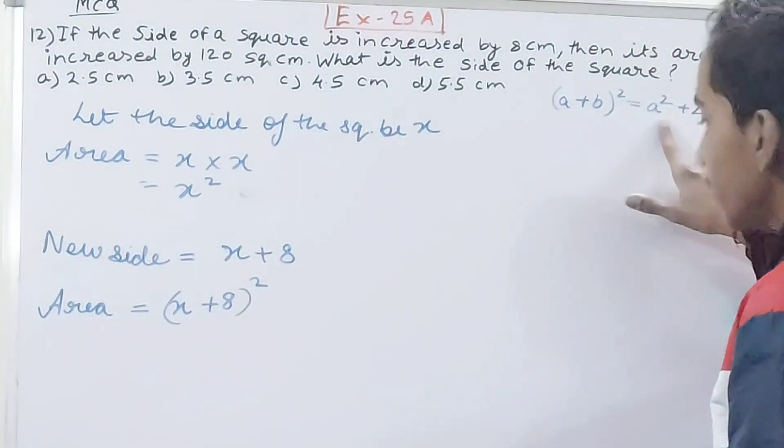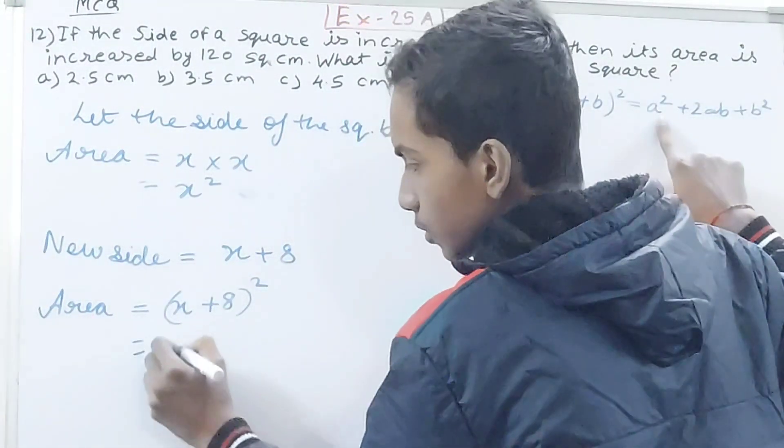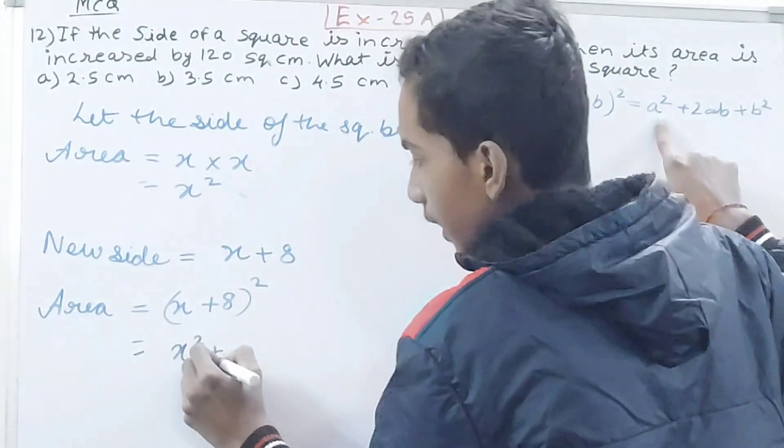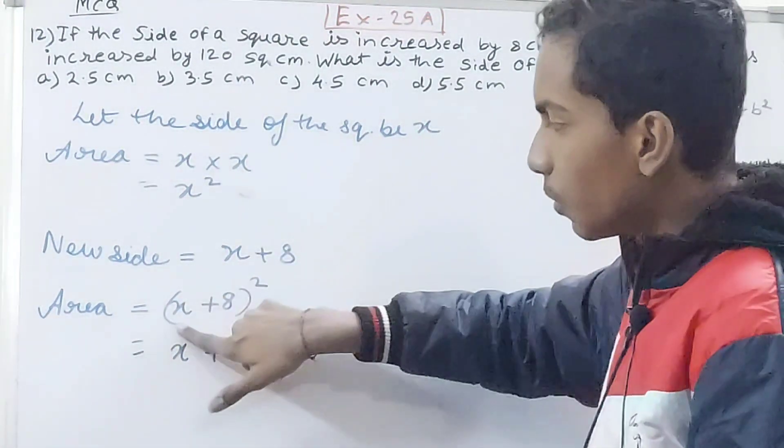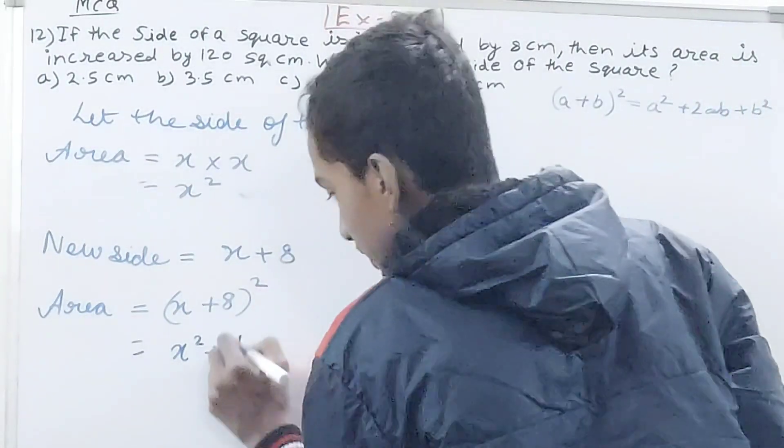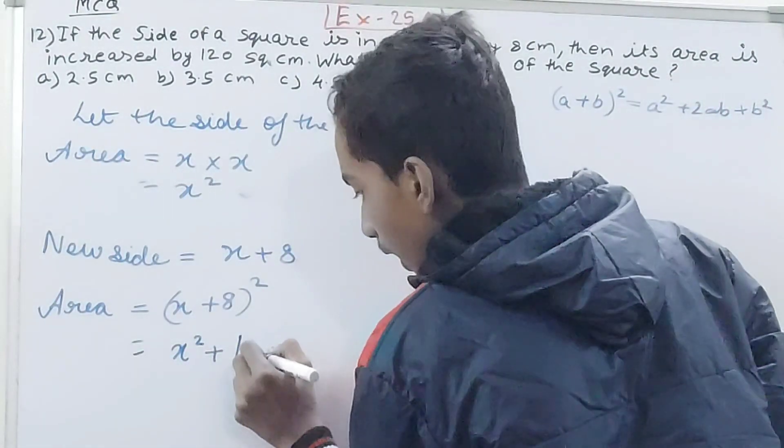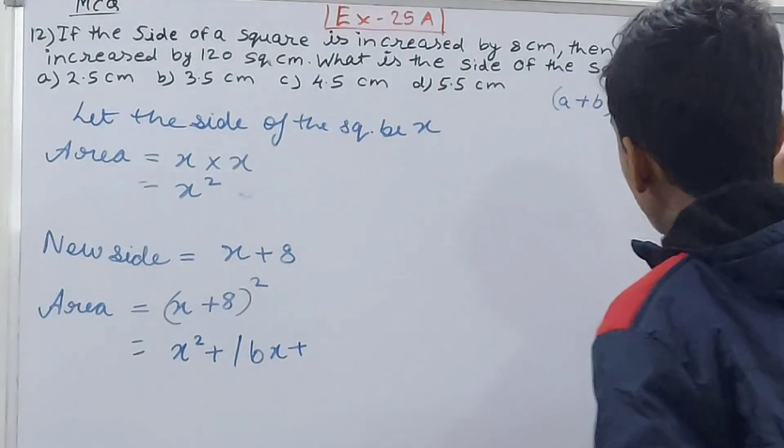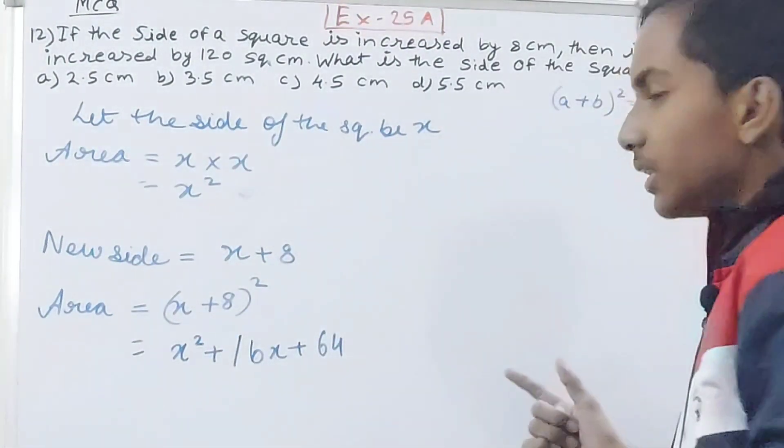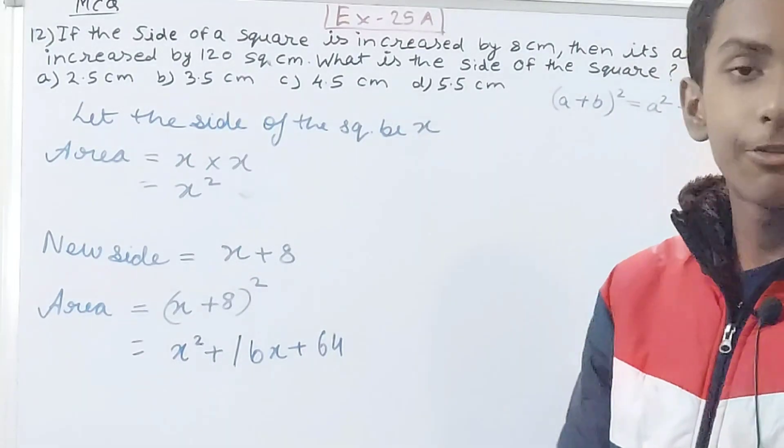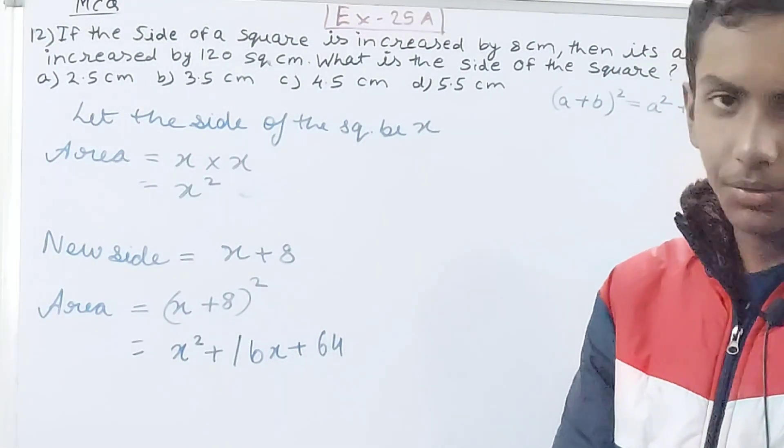First we have a squared, so x squared here, plus 2ab, 2 times x times 8 that is 16x, plus b squared, so that is the square of 8 which is 64. This is the new area after the side is increased by 8 centimeters.